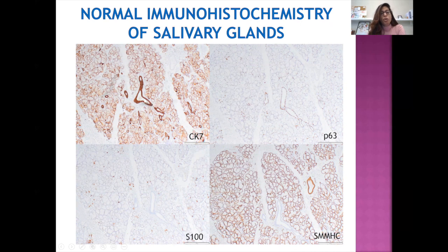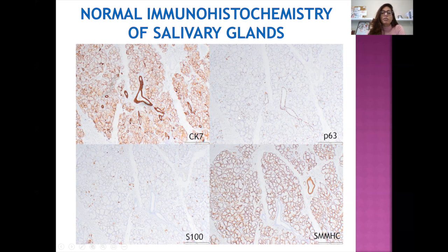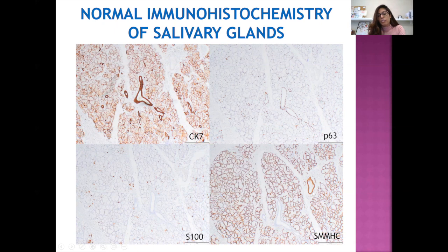Beginning with CK7, you can see strong ductal or luminal expression in the large excretory duct and striated ducts, and weak expression also in the acinar epithelial cells. P63 highlights both basal cells at the base of excretory and striated ducts, as well as myoepithelial cells lining the acini and intercalated ducts. S100 and SMMHC both help highlight myoepithelial cells — SMMHC nicely shows the rimming of acinar epithelial cells by myoepithelial cells, while the excretory duct is negative.